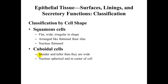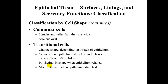The cell shapes are as follows. Squamous cells are flat, wide, and irregular in shape — arranged like flattened floor tiles with a flattened nucleus. Cuboidal cells appear almost cube-shaped; think of them as a cube. They can appear spherical, with the nucleus in the center of the cell.